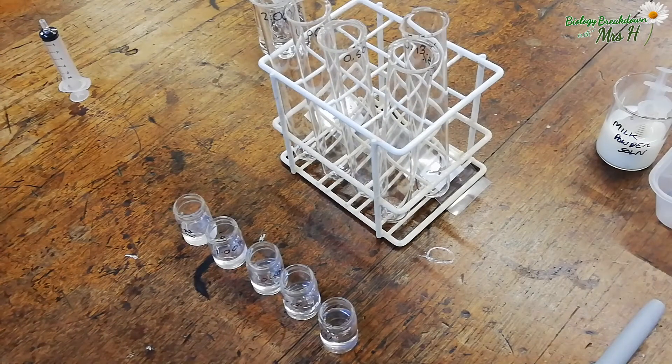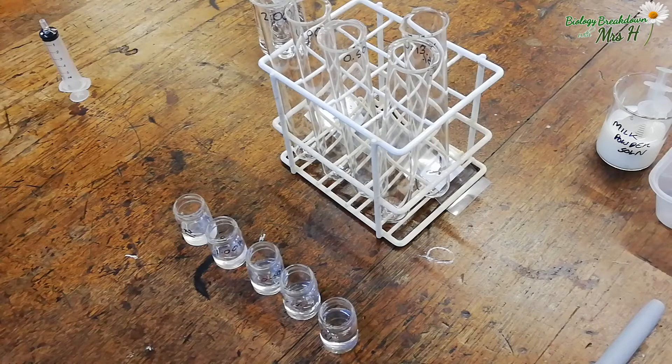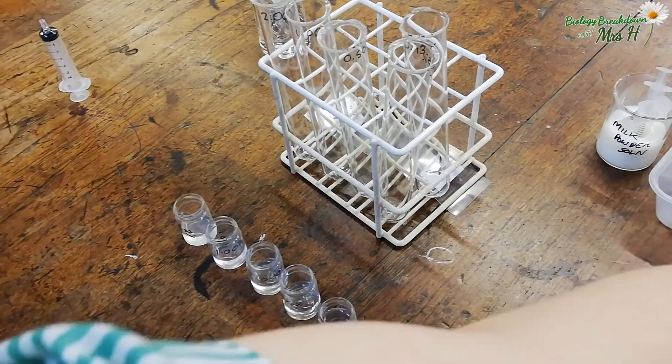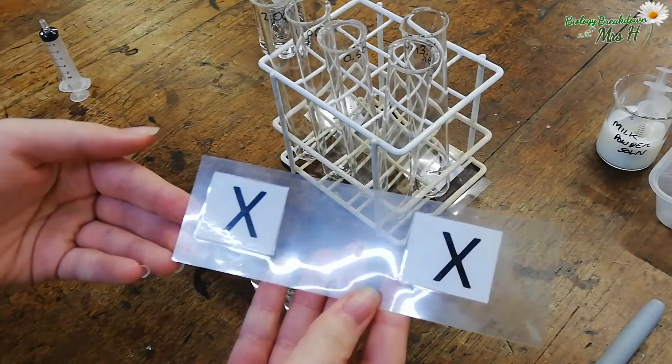We're going to use the trypsin, a protease enzyme which will catalyse the breakdown of the protein in milk. As you know milk is a white liquid and you can't see through it. When the protein in milk is broken down we can see through it so the end of the reaction will be when we can see a cross through the milk.